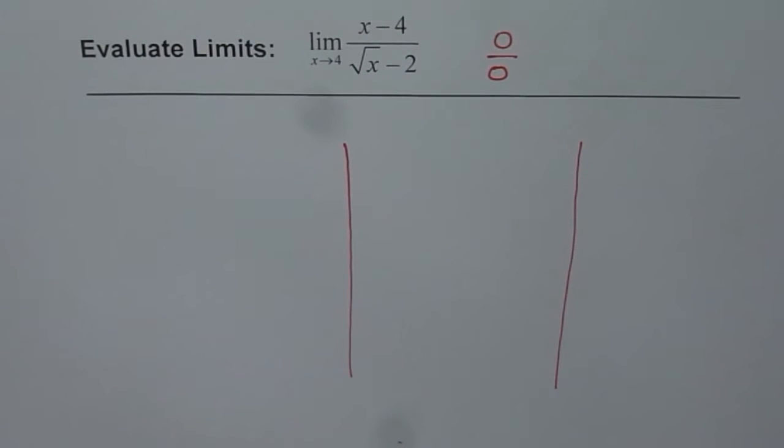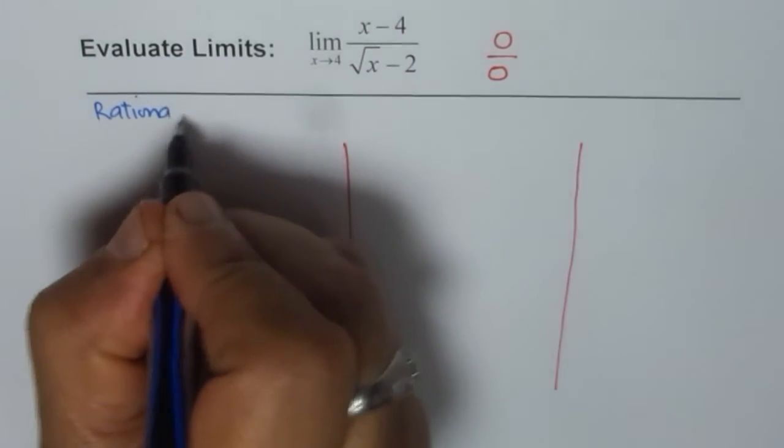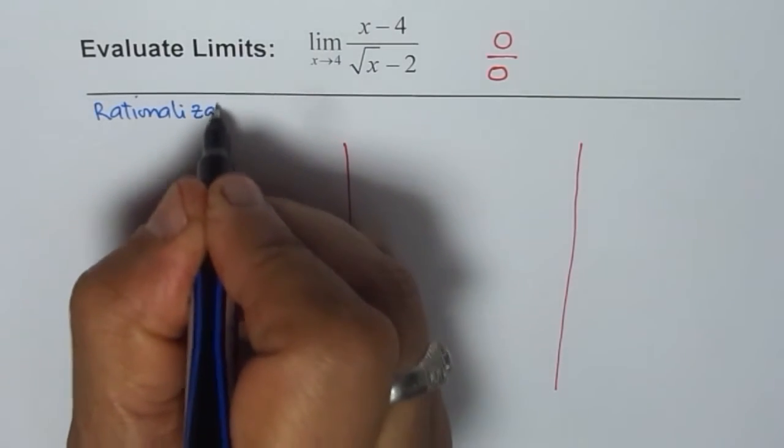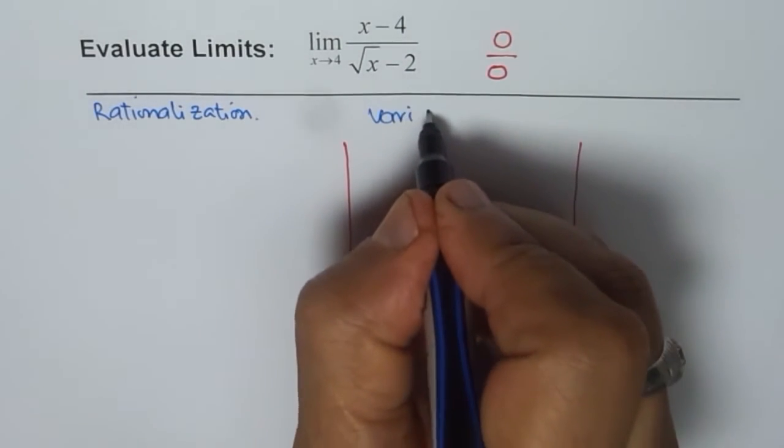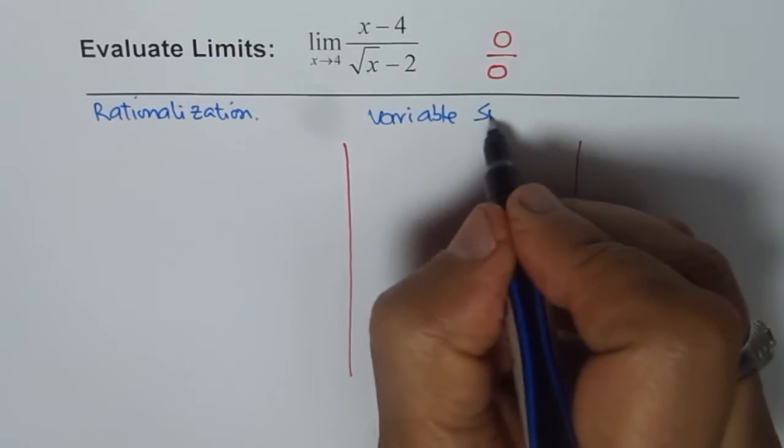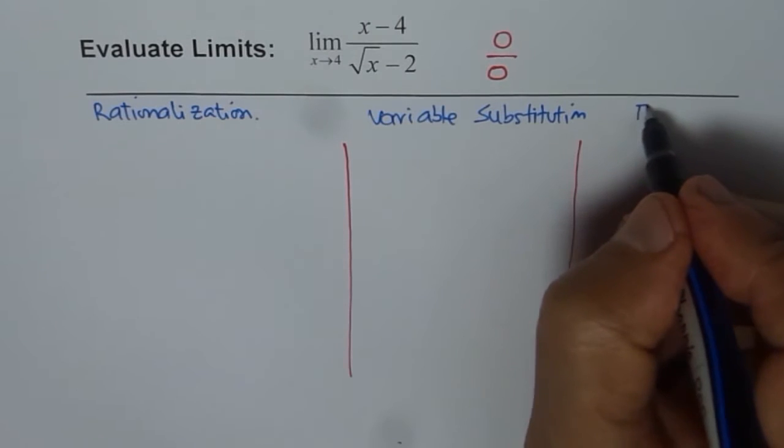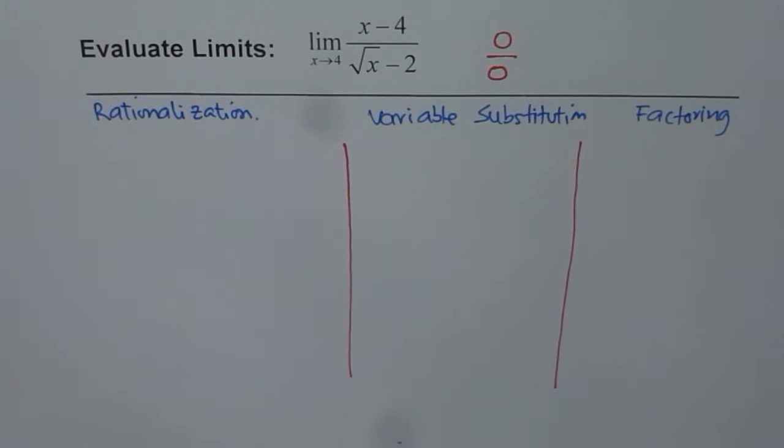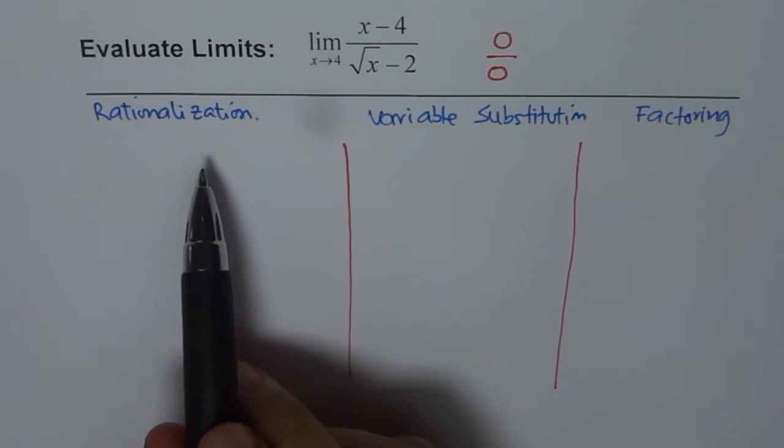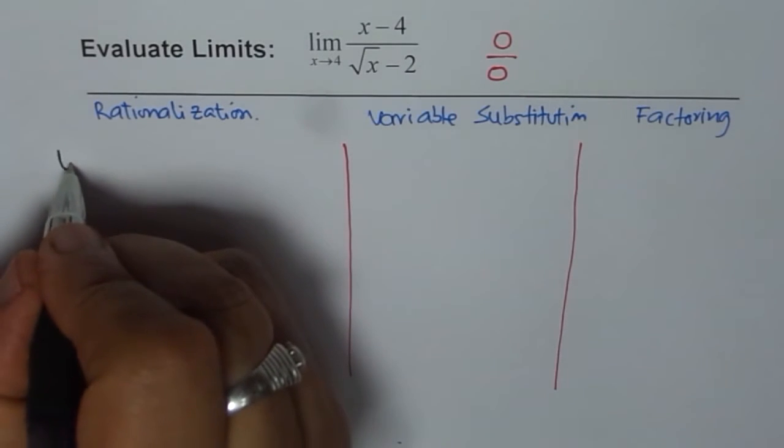Now the first one is rationalization. Second one will be variable substitution. And the third one is our factoring technique. These are the three techniques which I will apply. The first one, rationalization, is the most recommended for such examples.